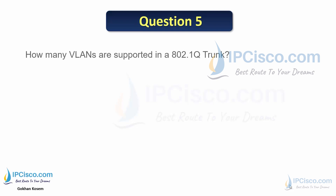Question 5: How many VLANs are supported in an 802.1Q trunk — 1005, 4096, 1000–2048, or 100? Remember, the VID field is 12 bits, and 2 to the power of 12 equals 4,096. The answer is B, 4,096.